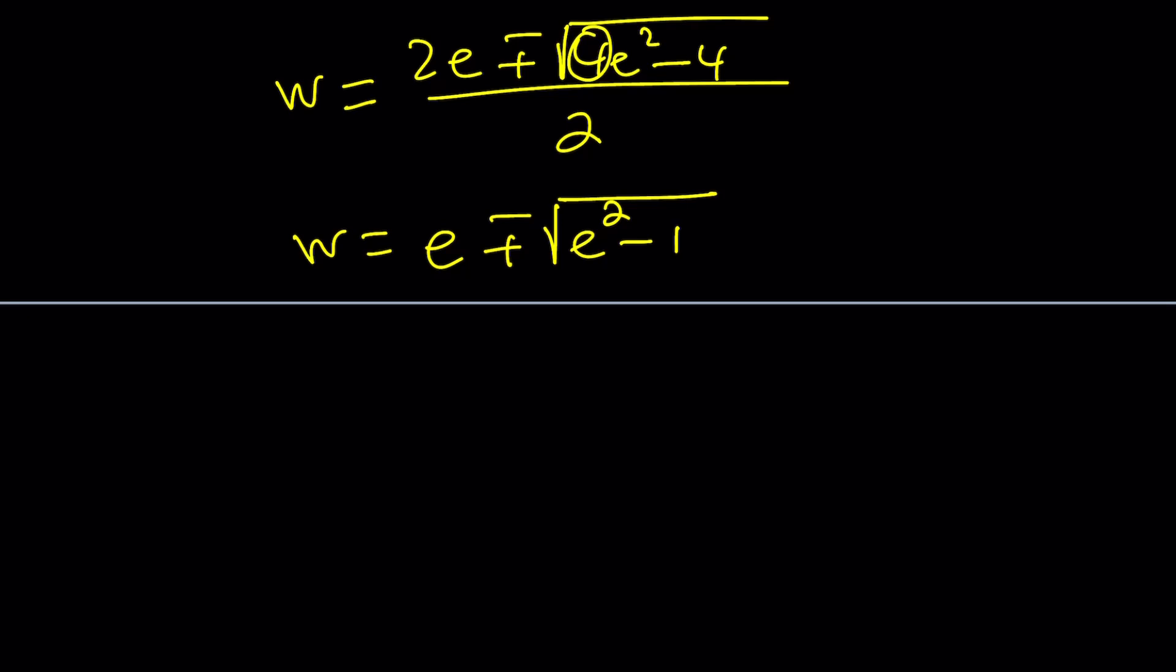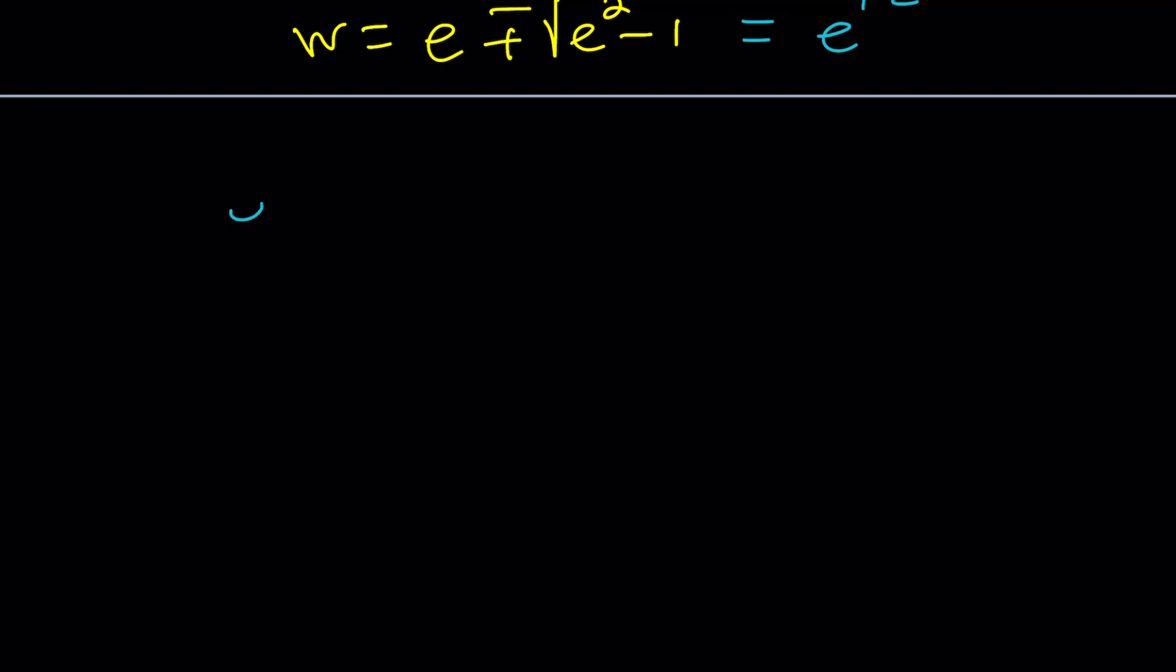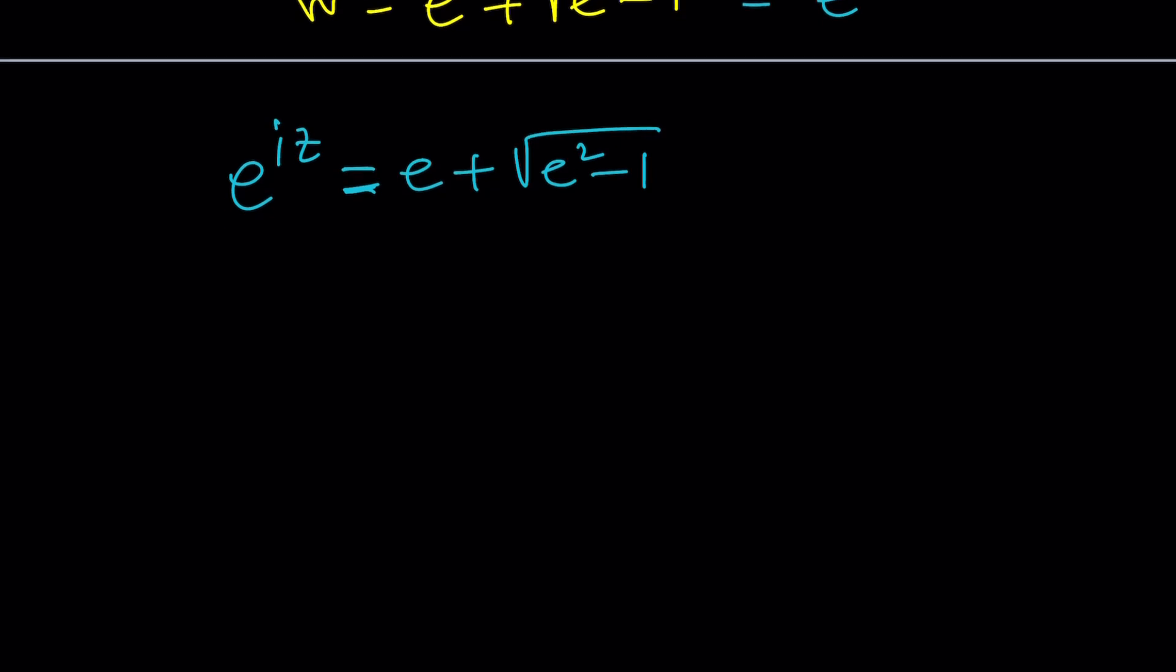Now, w is, remember, e to the power iz. So now, you've got to set each of these equal to e to the iz and solve for z. Let's go ahead and do it. E to the iz. Let's go with the plus sign first. And the minus sign is going to be very similar. Maybe I'm going to leave it to you as an exercise. I know some people hate that, and I hated it when I had that in the textbook. But that actually helps you.